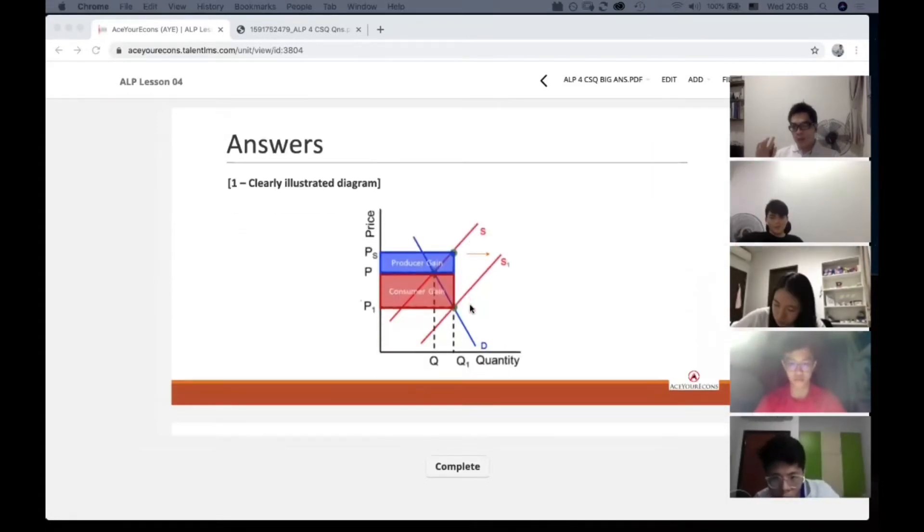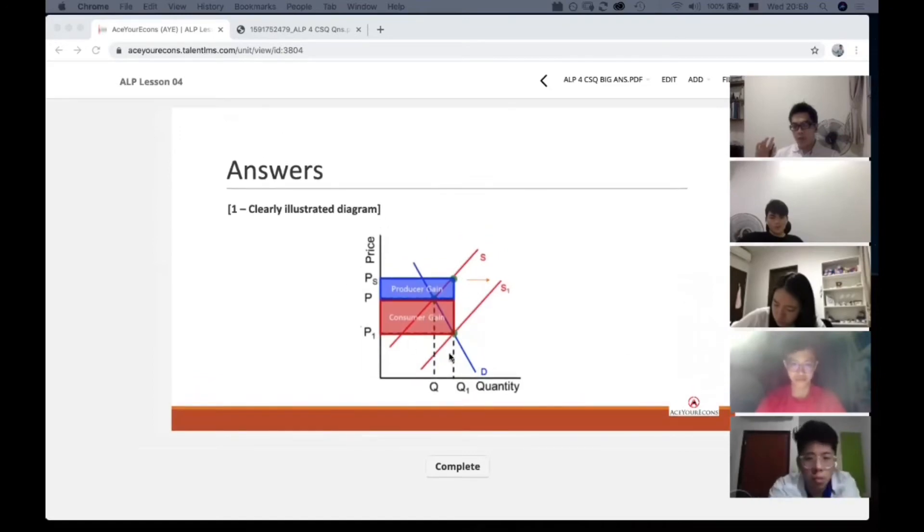This is the diagram. I want to illustrate to you how the diagram works. You can see that initially, the equilibrium price is P and Q.